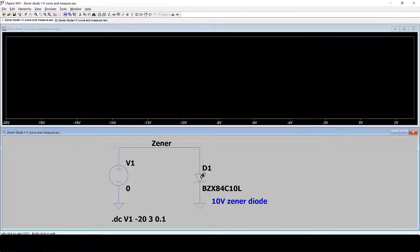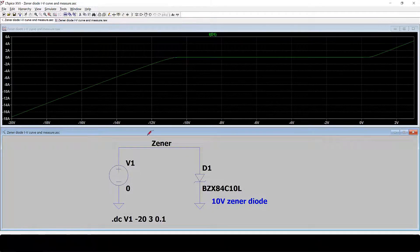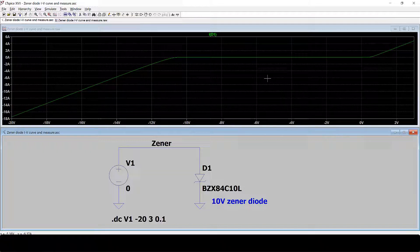We probe over D1 to see the current. So this is the I-V curve of this diode.